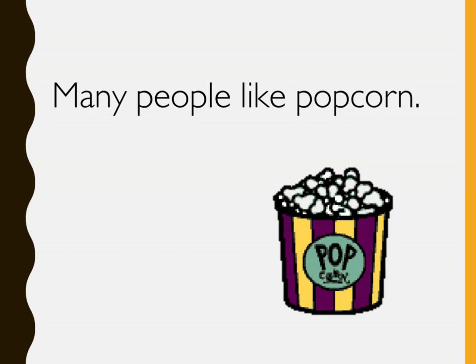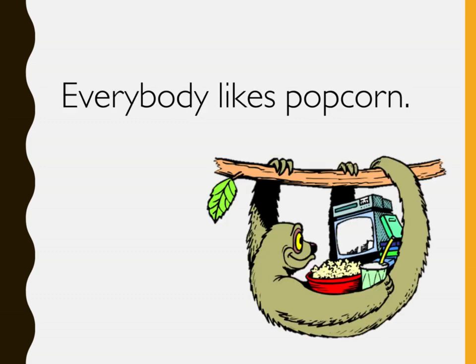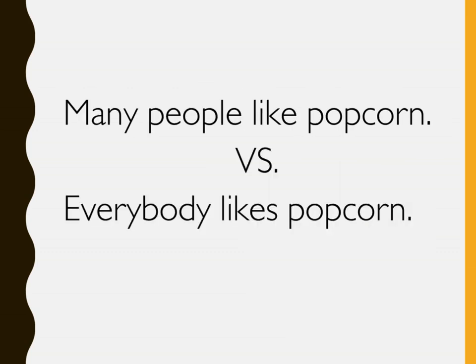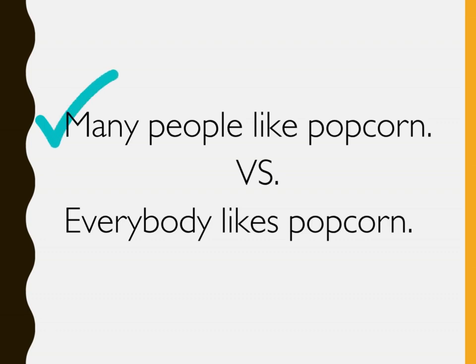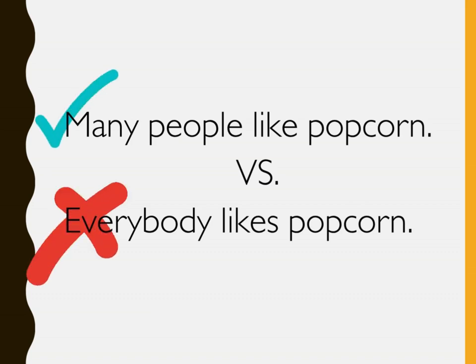Many people like popcorn is an example of generalization. Everybody likes popcorn is another example. Which of the two generalizations is more acceptable and valid? It is the first one, because many people like popcorn means a lot of people like eating popcorn. When we say everybody likes popcorn, we are saying that all of us like eating popcorn, which is not true, because some people do not like popcorn.